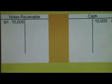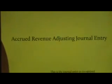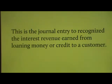For the accrued revenues original ledger entry, you will debit notes receivable for ten thousand dollars and credit cash — decreasing cash — for the ten thousand dollars loaned out to another company. The accrued revenue adjusting journal entry is to record and recognize the interest or revenues earned from loaning money or credit to a customer.